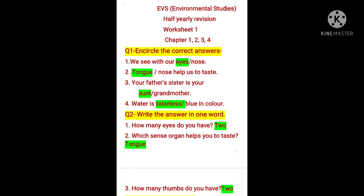Worksheet number 1, question number 1: encircle the correct answers. We see with our eyes or nose — we see with our eyes. Eyes help us to read the contents or to see things. The answer is eyes. Second, tongue or nose help us to taste. Tongue helps us taste things — whether it is sweet, sour, bitter, or salty. Our tongue also helps us to speak. The correct answer is tongue.